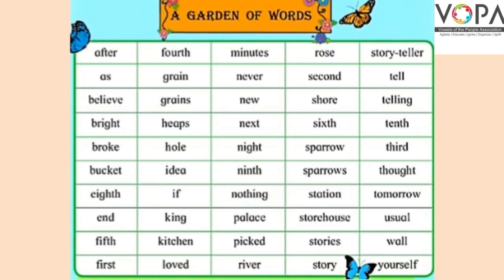'Palace' — p, a, l, a, c, e. Palace یعنی راجہ کا محل۔ 'Picked' — p, i, c, k, e, d. Picked یعنی اٹھانا۔ 'River' — r, i, v, e, r. River یعنی ندی۔ 'Rose' — r, o, s, e. Rose یعنی گلاب۔